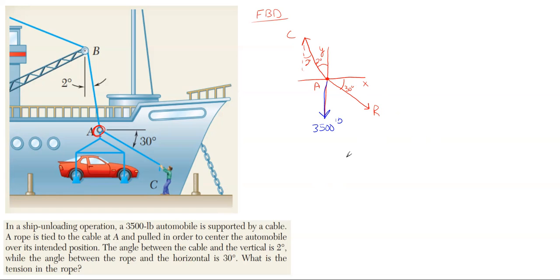Whenever your free body diagram is done and you don't know the next step, in equilibrium problems you're always going to sum forces in the directions — x and y, since we're in 2D. It doesn't really matter which one you start with first; typically there's usually one better than the other, but most cases not really. If you start with the wrong summation equation, just go to the other one. I'm going to start with the y, so I'll only consider vertical forces in this y equation.